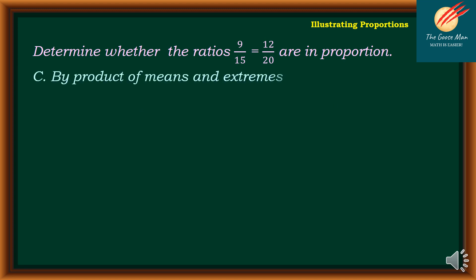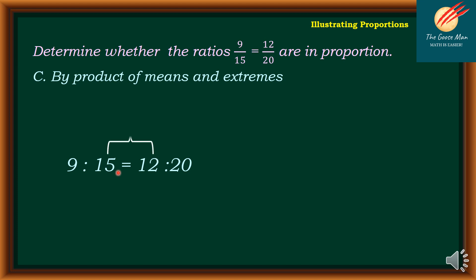The next method is the product of means and extremes. If I have 9 is to 15 is equal to 12 is to 20, the numbers inside — 15 and 12 — are what we call the means. On the other hand, the numbers outside — 9 and 20 — are what we call the extremes.